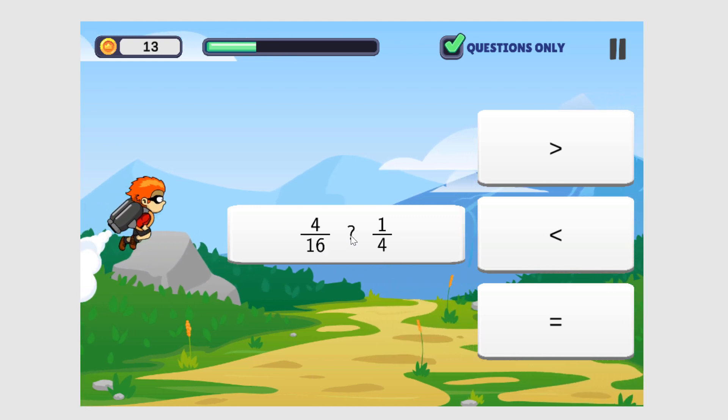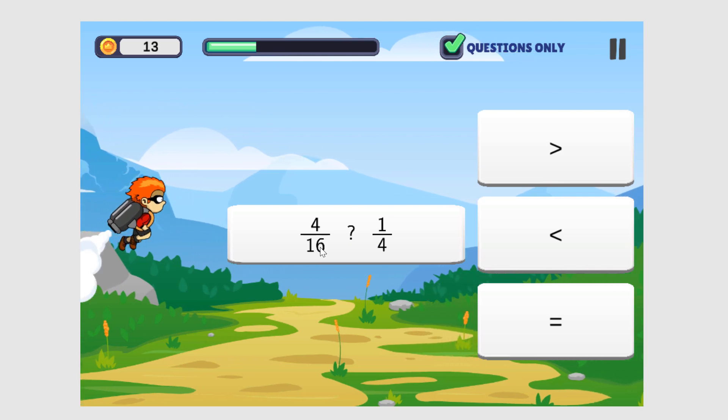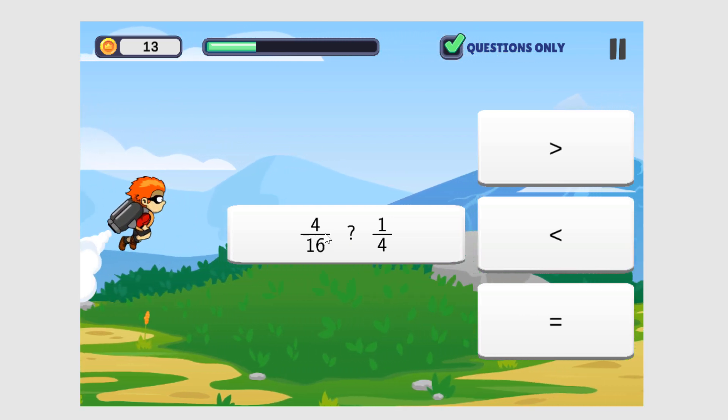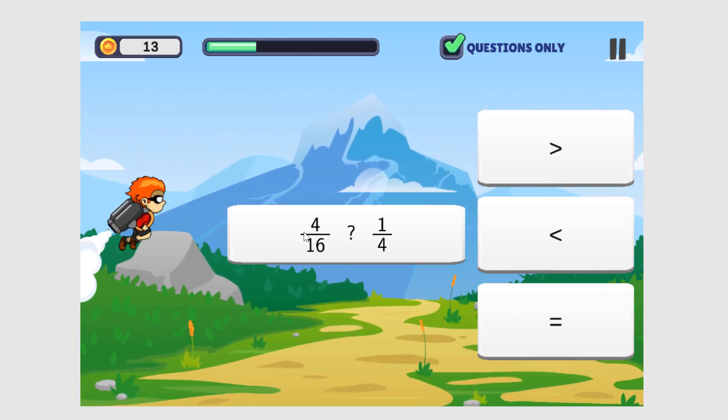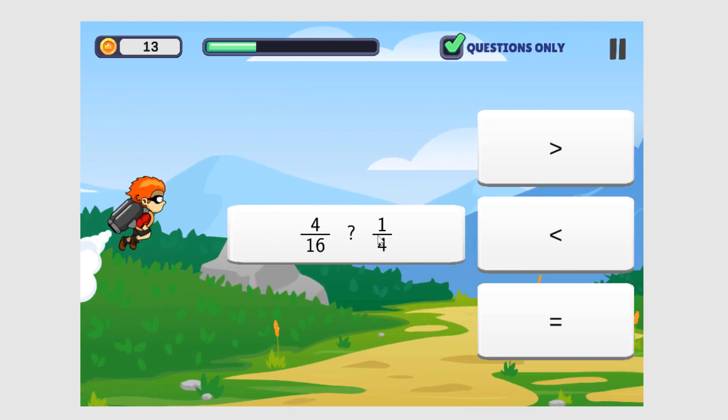4 sixteenths compared to 1 fourth. Let's simplify 4 sixteenths. We can divide the numerator and the denominator each by 4, and we get 1 fourth. So 1 fourth is equal to 1 fourth.